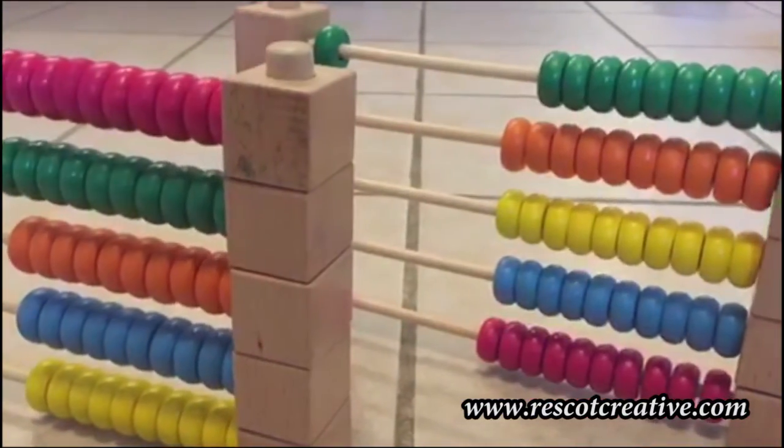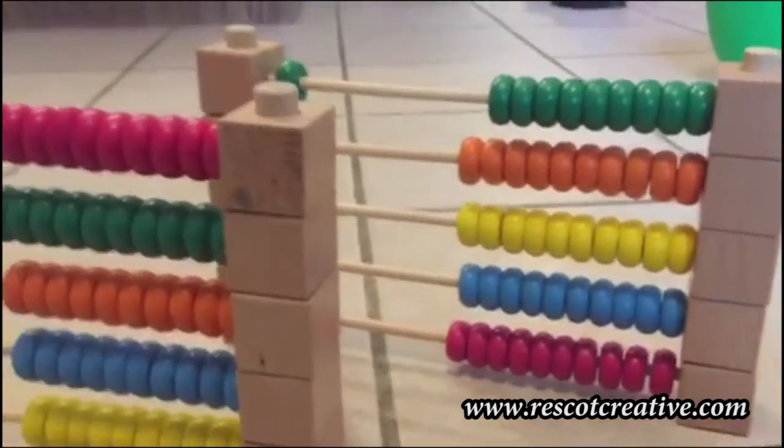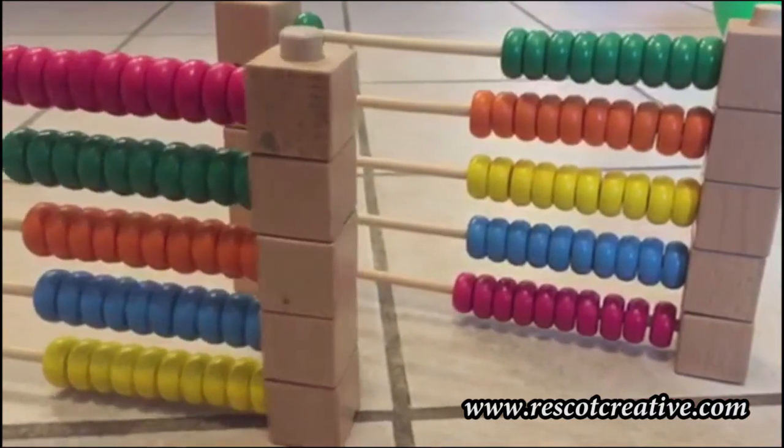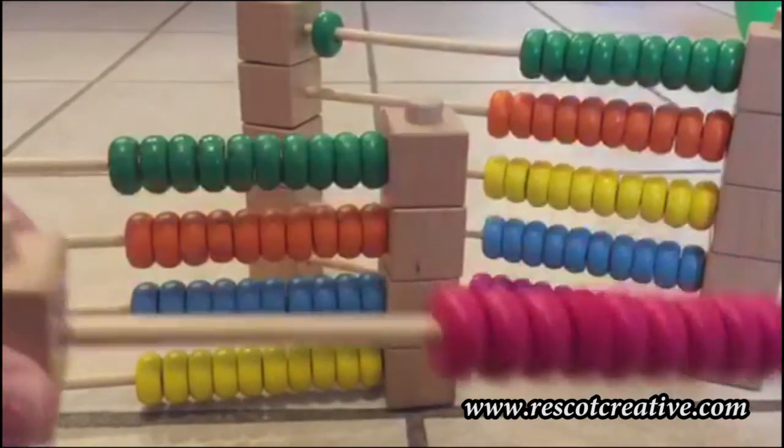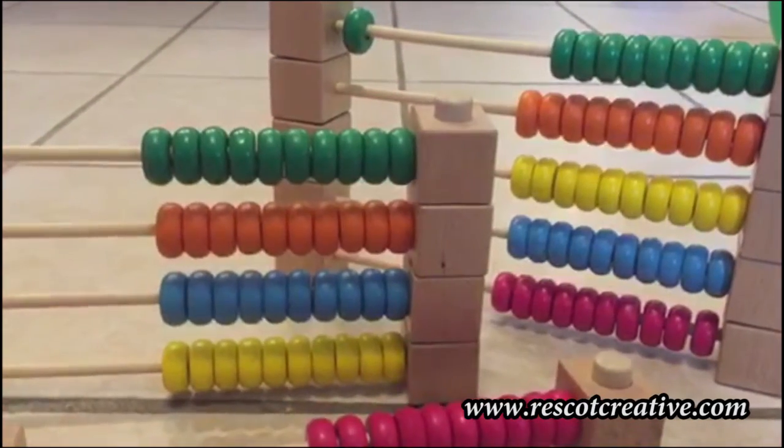I originally just bought the one abacus which comes with ten rows, each row has ten beads, but I decided to purchase an additional one so that I can literally give each of my students a row of beads to practice their drills on their own at home.